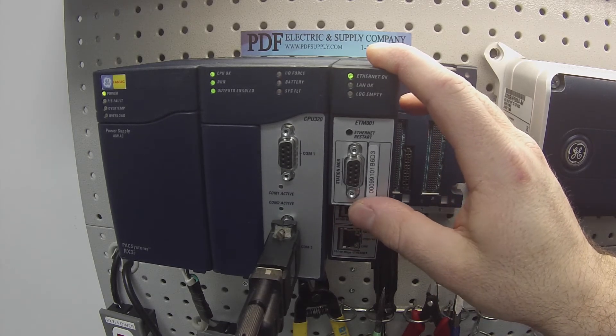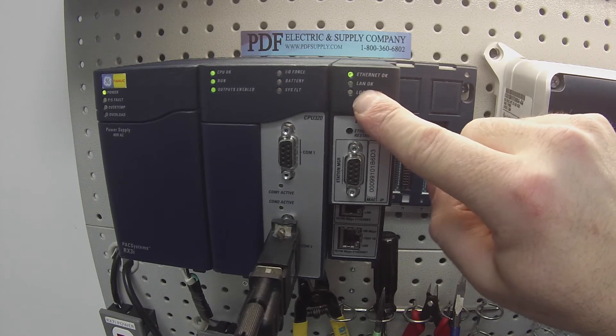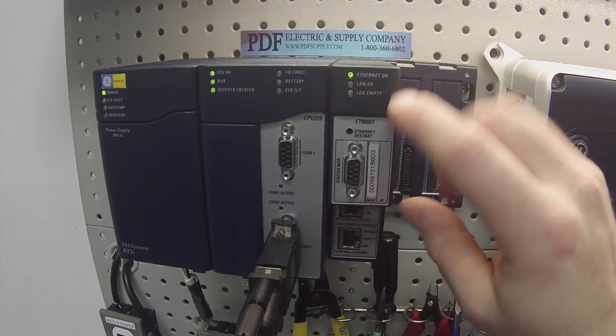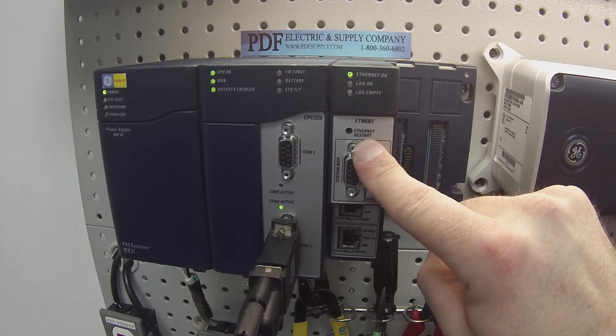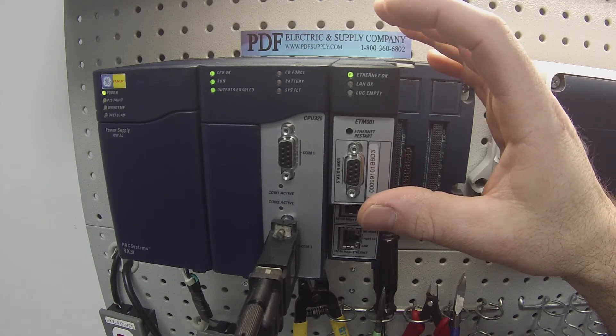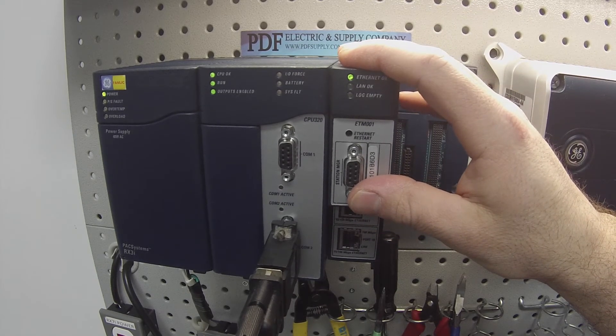Another thing that could happen is if you have an arrangement of lights that are blinking in unison, that sometimes means that somebody's held down the ethernet restart button too long and they've inadvertently put it into firmware upgrade mode.